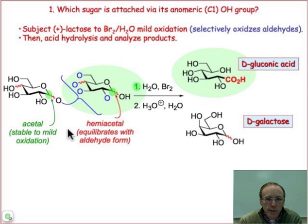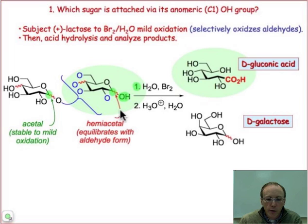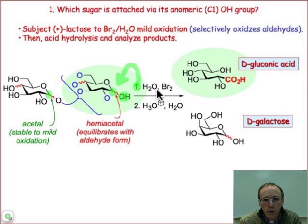If you identify these two anomeric carbons: one is an acetal, meaning it's an anomeric carbon that doesn't have a hydroxyl group — it has two carbon-oxygen bonds, none of which are hydroxyls. The hemiacetal also has two carbon-oxygen bonds, but one of them is a hydroxyl group. It's that position which, under the conditions of mild oxidation — as discussed back on page 298 — will form the aldonic acid. The second step is a hydrolysis step.